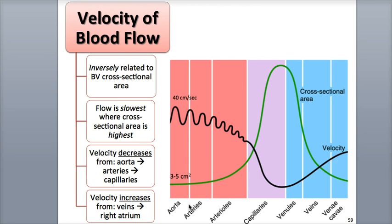For comparison, the aorta has a total cross-sectional area of 3 to 5 square centimeters, and blood flows through it at an average velocity of 40 centimeters per second. The capillaries have a total cross-sectional area of 4,500 to 6,000 square centimeters, with a blood velocity of less than 0.1 centimeter per second.